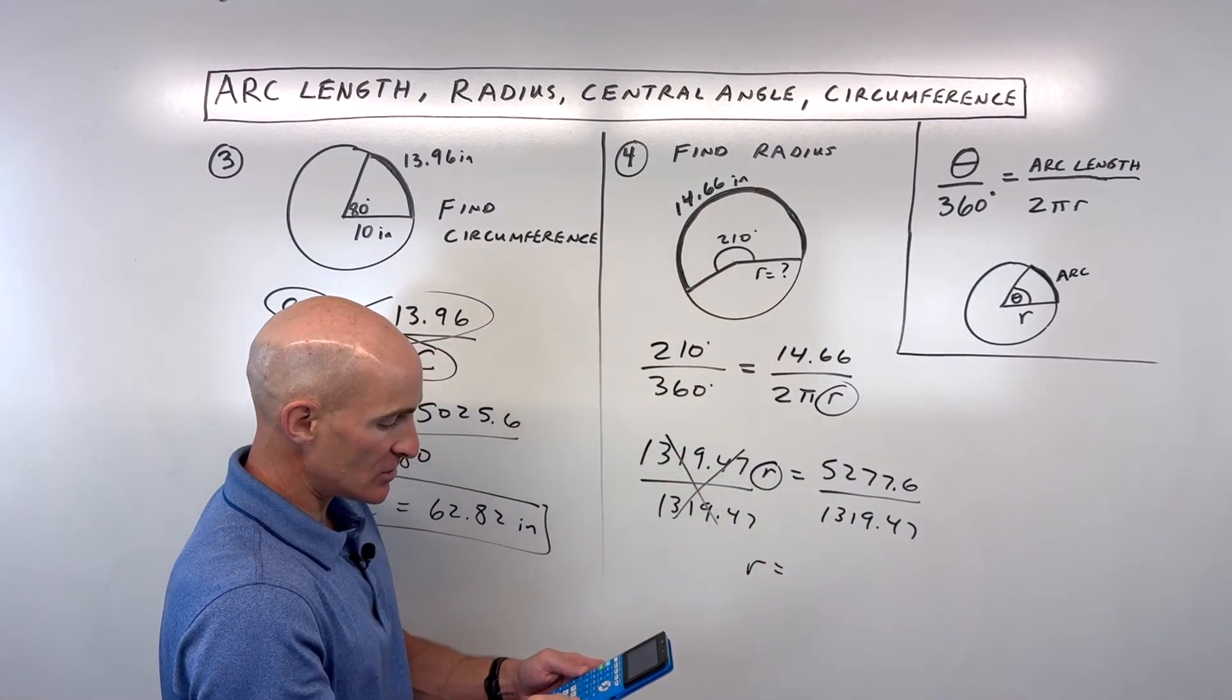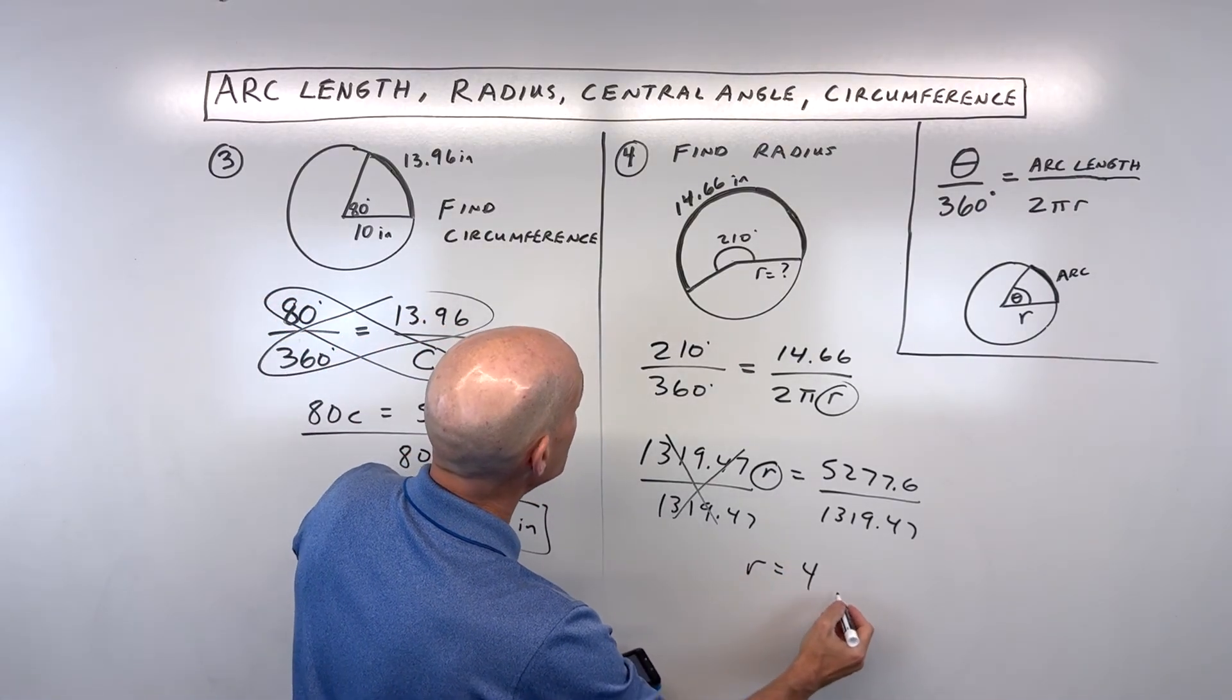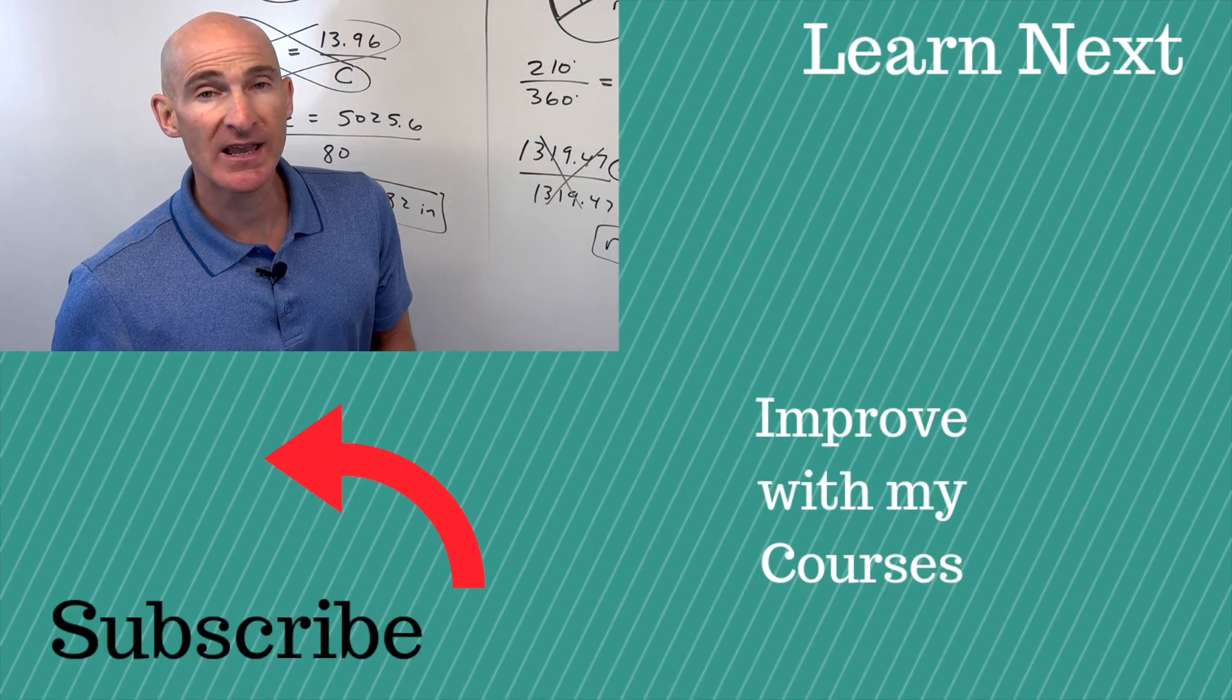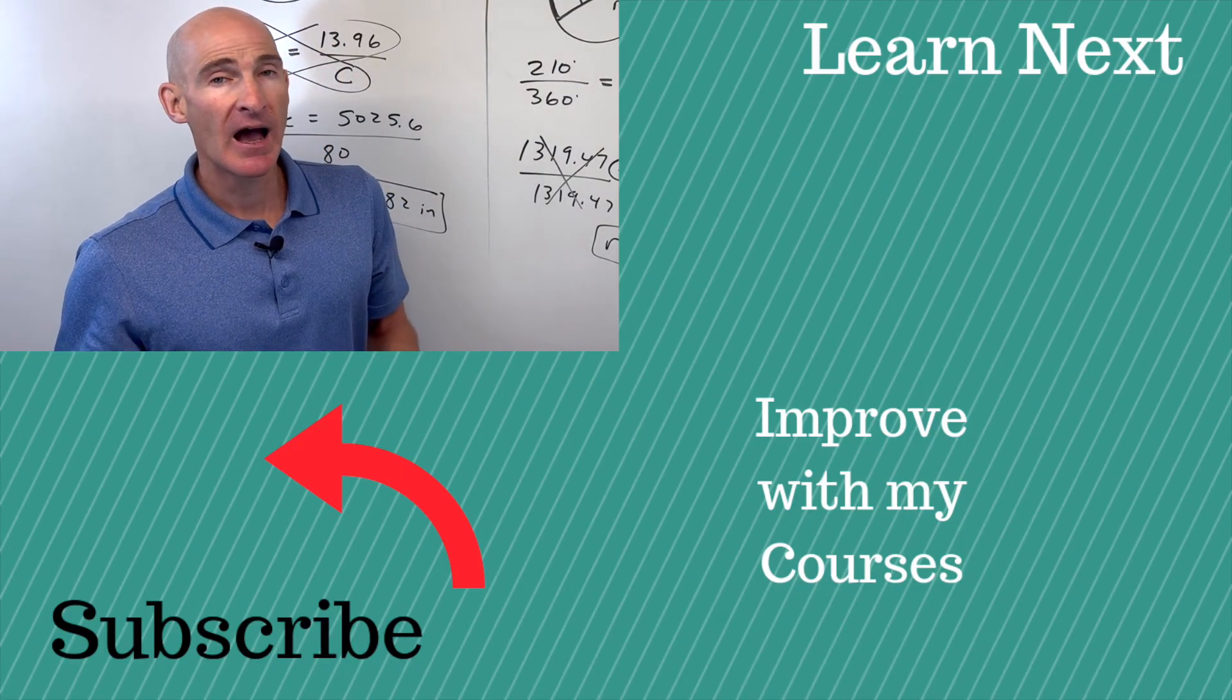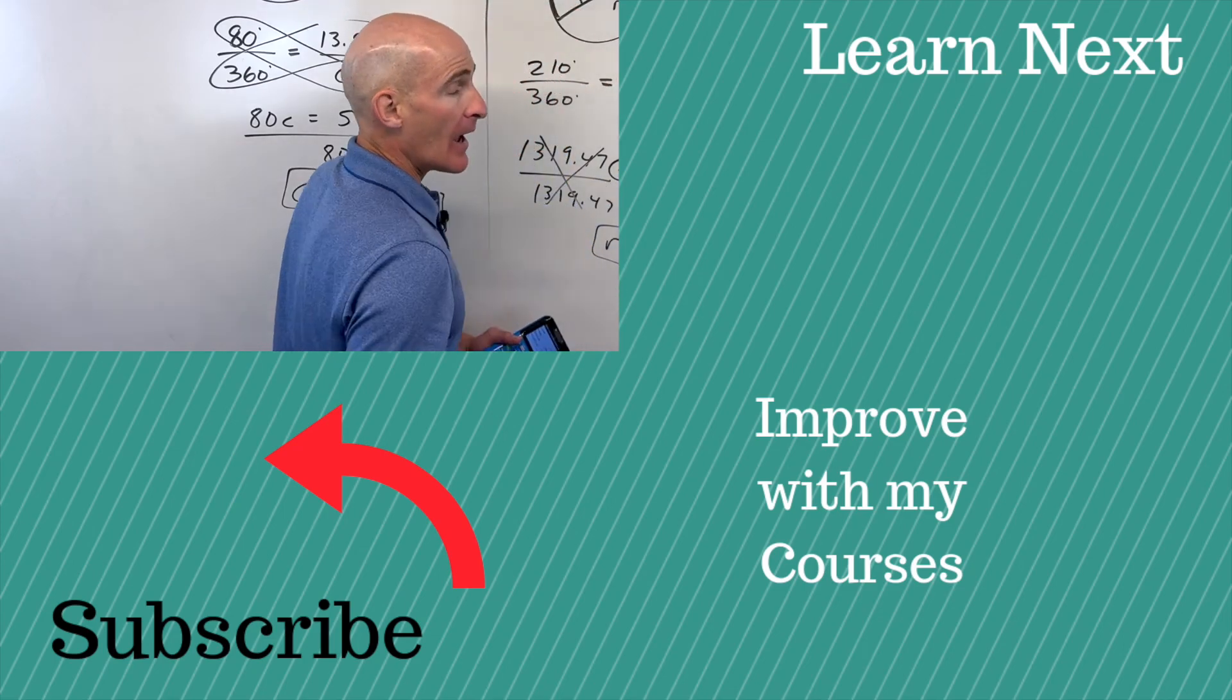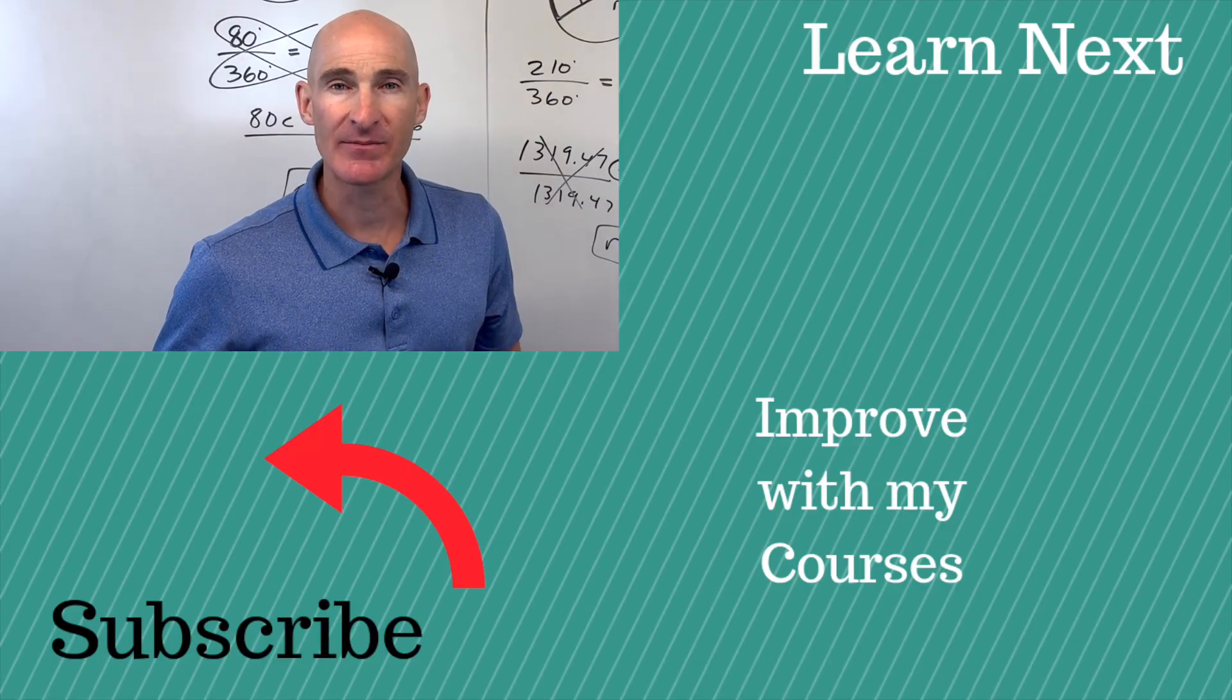And so our radius is coming out to 4, and that is in inches. So 4 inches, and you got it. Great job if you're able to follow these four examples dealing with the radius and the central angle and the arc length and the circumference. I have a similar video talking about the area of a sector, and that's the next concept to understand. So follow me over to that video right there, and we'll dive into that concept. I'll see you over there.